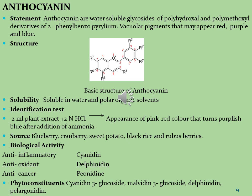Let's see what are the anthocyanins. Anthocyanins are water-soluble glycosides of polyhydroxyl and polymethoxyl derivatives of phenyl benzopyrylium. These are found as vacuolar pigments that may appear red, purple, and blue in color. Different kinds of polyhydroxyl and polymethoxyl groups are present within the base skeleton of the anthocyanin molecule.